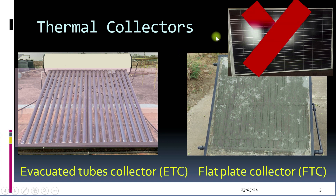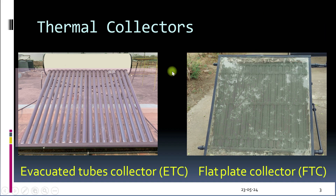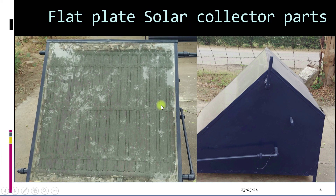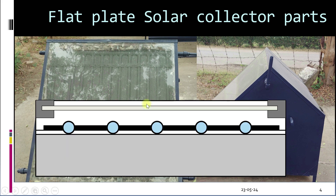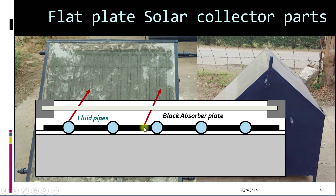Solar thermal collectors form the heart of solar water heaters. Let's first focus on flat plate solar thermal collectors. These are fluid pipes, and this is an absorber plate — both are generally made of metal. The metal can be aluminum, copper, or iron. A selective coating of black color is applied on the absorber plate so that it can absorb maximum solar radiation.